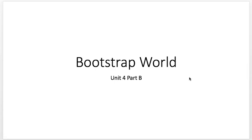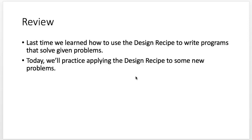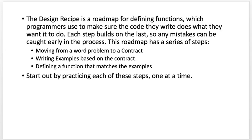Welcome to our second part of Unit 4. Let's see where we've been. Last time you learned how to use the design recipe to write programs that solve given problems. Today we're going to practice applying the design recipe to some new problems. The design recipe is a roadmap for defining functions, which programmers use to make sure the code they write does what they want it to do. Each step builds on the last.